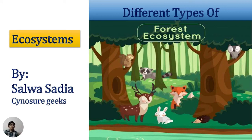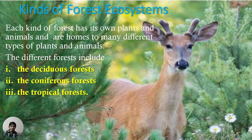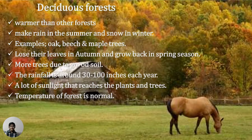Hi everybody, this is Ala Saadia. This is the third episode of the ecosystem series, and we are going to discuss forest ecosystems. Kinds of forest ecosystems: Each kind of forest has its own plants and animals and is home to many different types of species. The different forests include the deciduous forest, the coniferous forest, and the tropical forest.